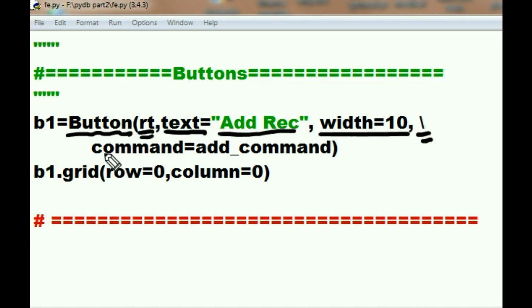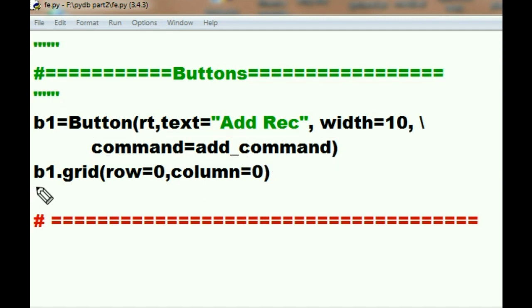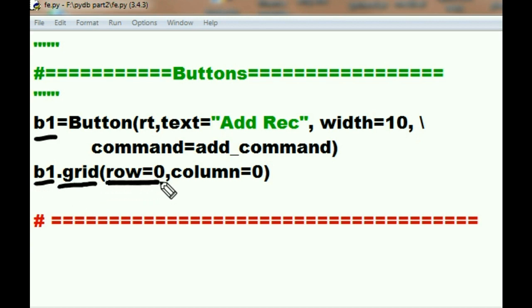When somebody clicks on the button that says 'add rec', the system executes the add_command function. Then button b1 is told to place itself into the grid at row 0, column 0. Now let's go back and look at what add_command actually does.